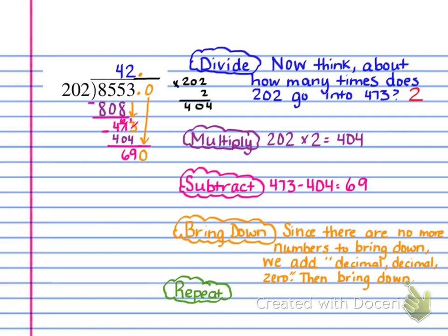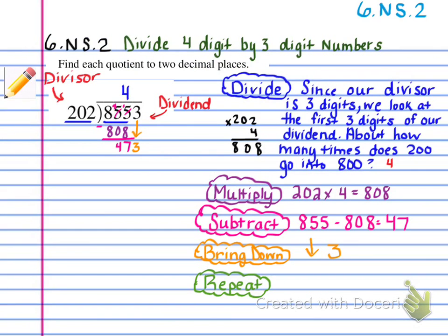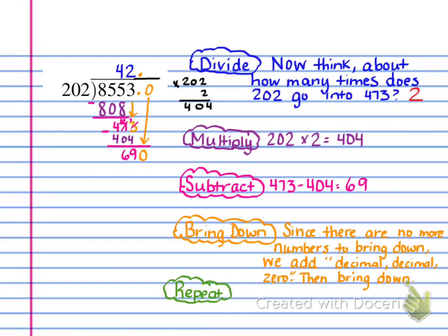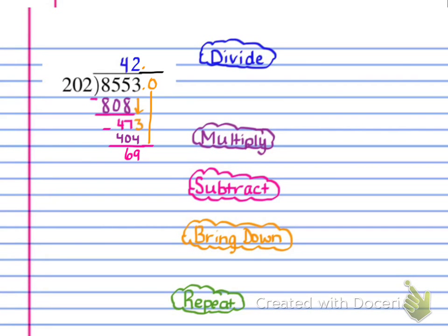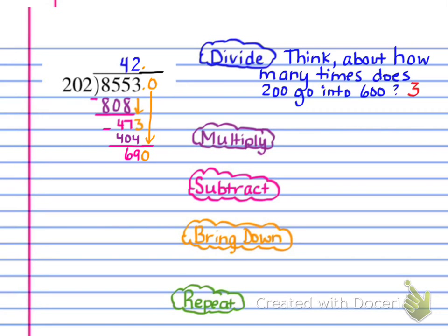Remember, we're in sixth grade, so we're not working with remainders anymore — we're going to be dividing out to two decimal places. The directions say to find the quotient to two decimal places. So you add a decimal in the quotient first, then a decimal at the end of the dividend, and then a zero. We've dropped our zero down, so now we repeat the process. Think about how many times does 200 go into 600. We don't need to use 690 exactly because of that three-digit divisor — this is just an estimate.